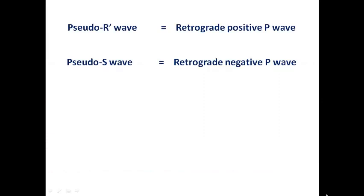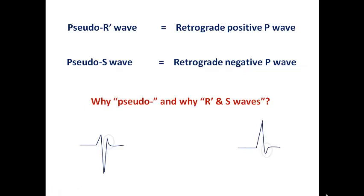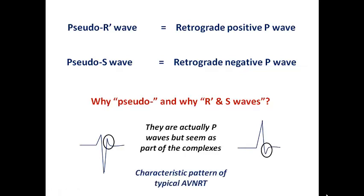We call them pseudo-R' and pseudo-S because they are not part of the QRS complex; they are retrograde P waves. They appear negative in the inferior leads because they travel in reverse direction to sinus rhythm, and positive in aVR and V1. In typical AVNRT, the retrograde limb is the fast pathway, conducting at very high velocity, so the retrograde P wave appears nearly fused with or masked inside the QRS complex due to simultaneous atrial and ventricular depolarization.